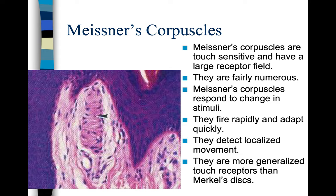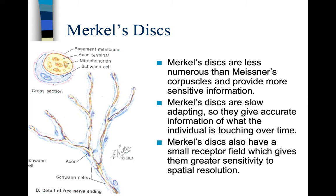Meissner's corpuscles are touch-sensitive and have a larger receptor field. They are fairly numerous, respond to changes in stimuli, fire rapidly, and adapt quickly — detecting localized movement. They are more generalized touch receptors than Merkel's discs. Merkel's discs are less numerous than Meissner's corpuscles but provide more sensitive information. Merkel's discs are slow-adapting, giving accurate information of what the individual is touching over time. They also have a small receptor field, which gives them greater sensitivity to spatial resolution.